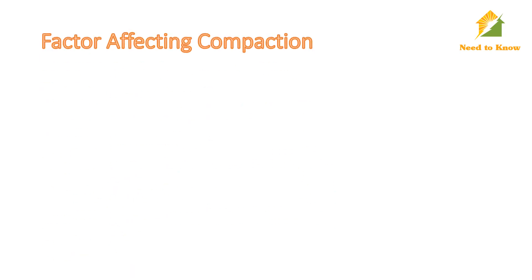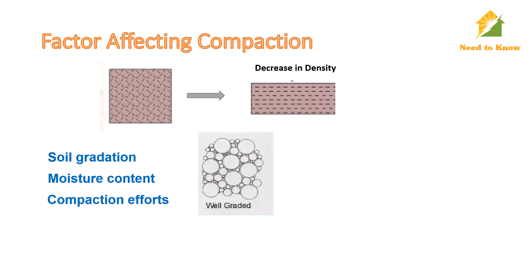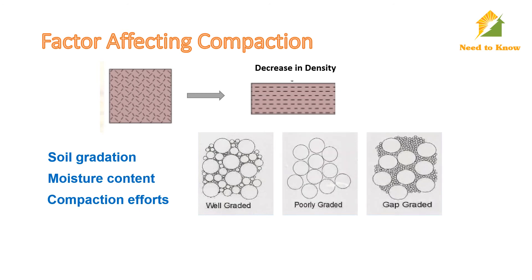Factors affecting compaction. Since compaction means making soil denser, the factors that affect the density of soil affect compaction. There are three major factors: soil gradation, moisture content, and compaction effort. Soil gradation greatly affects compaction. Well-graded soil gives good compaction, as it consists of all sizes of particles which fill the void spaces well. On the other hand, poorly graded, uniformly graded, and gap-graded soils cannot be packed well, leaving more void spaces and thus giving lower compaction.